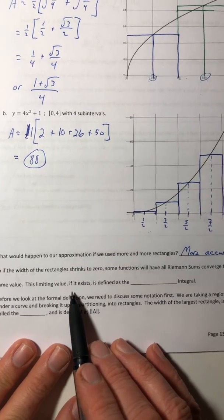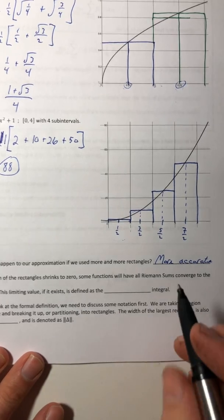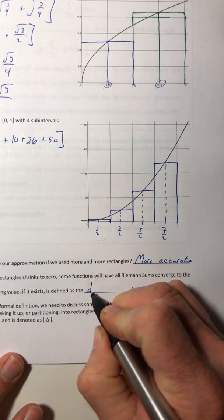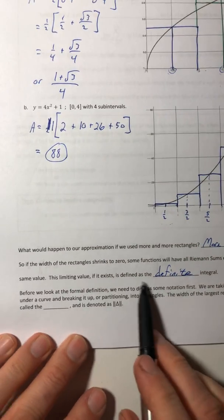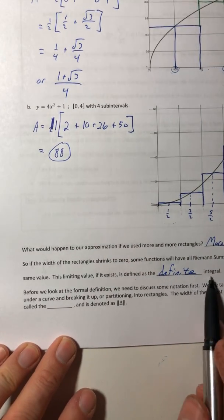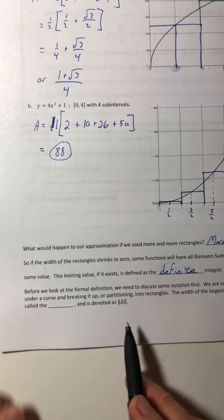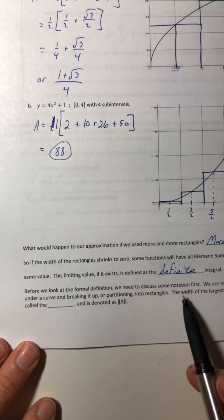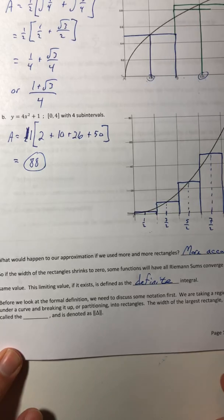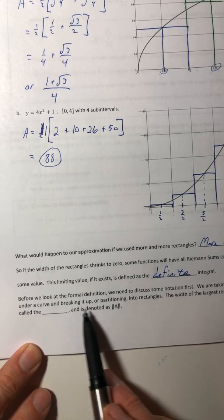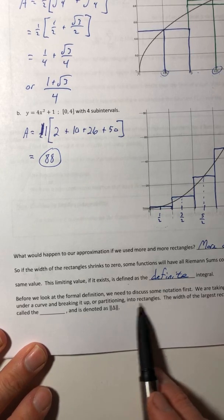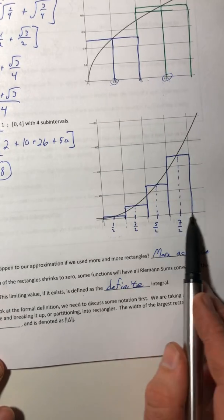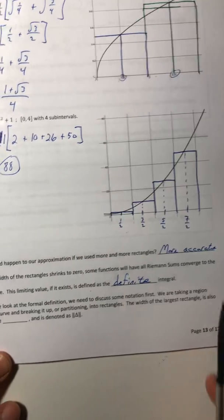So if the width of the rectangle shrinks to zero, some functions will have all Riemann sums converge or reach the same value. This limiting value, if it exists, is defined as the definite integral. So we have indefinite integrals and now we're looking at a definite.